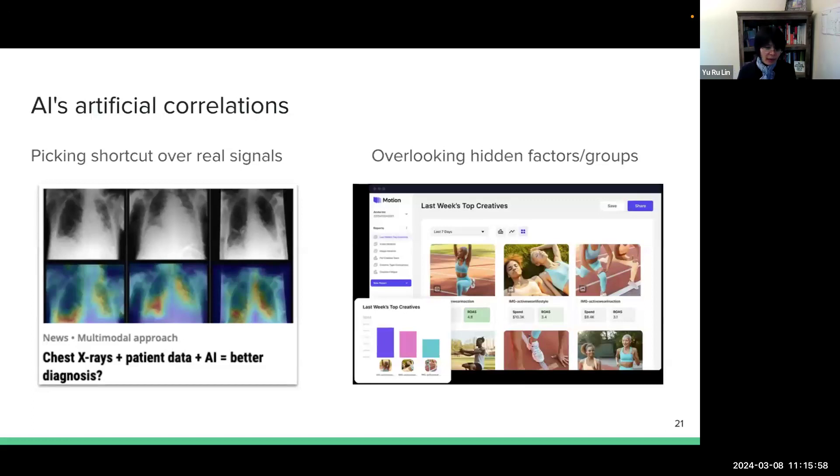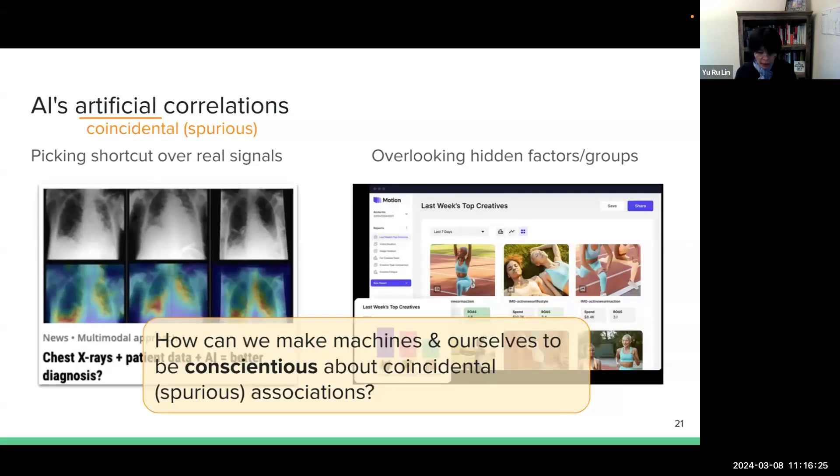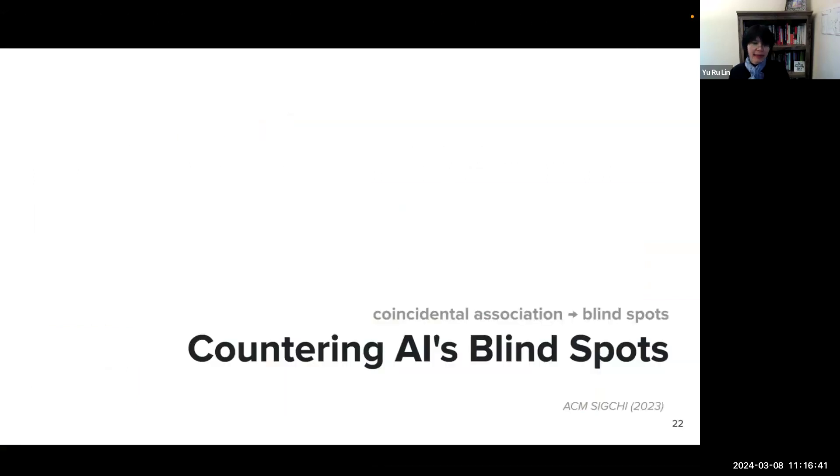So both picking shortcut signals over real signals and overlooking the hidden factors or groups, both of these can lead to artificial correlations. So today, I'm going to introduce our research in tackling AI's artificial correlations, also known as coincidental or spurious associations. So how can we make the machines and ourselves to be conscientious about coincidental or spurious associations? So I'm going to talk about two works as an example. The first work is Countering AI's Blind Spots. So this work is published in CHI.